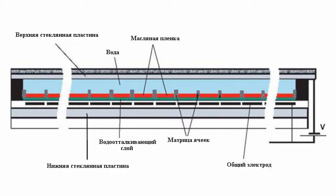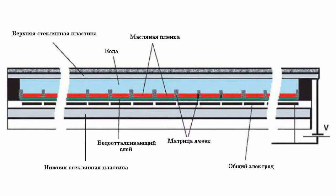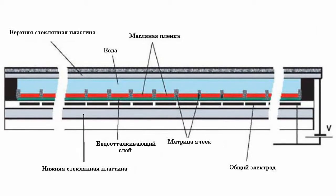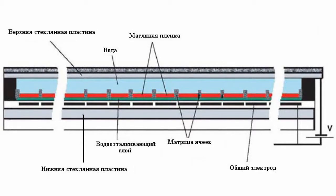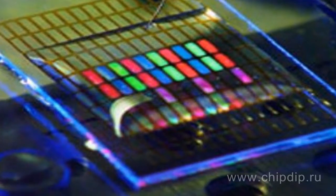The surface of the cells is covered with a water repellent layer. The liquid interacting with the layer tends to roll up in a drop. On the inner side of the upper plate there are transparent control electrodes. The free space between the plates is filled with a thin layer of water. A coloring agent which is added to the oily liquid determines the color of the whole pixel.